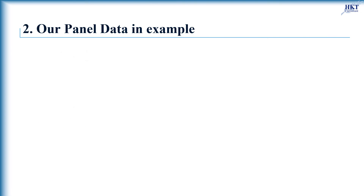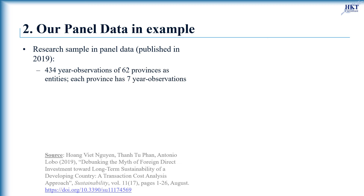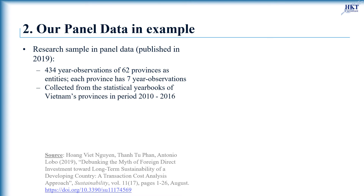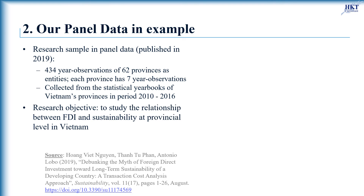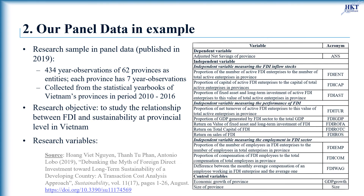We will show you how to implement the Lagrange multiplier test on our panel data, which includes 434 year-observations of 62 provinces as entities in our sample, with each province having 7 year-observations. Our research aims to study the relationship between foreign direct investment and sustainability at the provincial level in a developing host country such as Vietnam, in the period between 2010 and 2016.